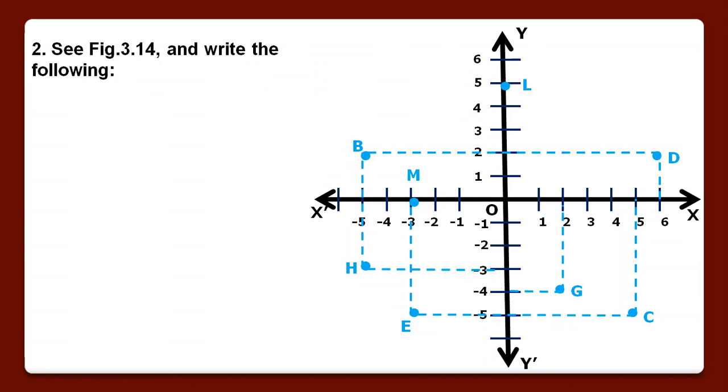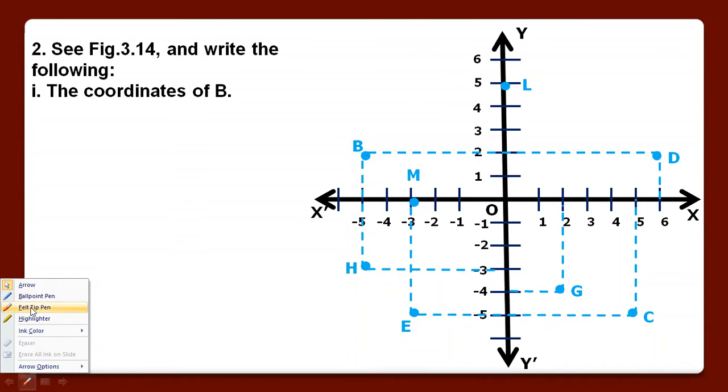See figure 3.14 and write the following. This is figure 3.14 and we have to answer some questions. The coordinates of B: so the point B is marked in the figure like this. For coordinates, first of all we will write x-coordinate, this is minus 5, and the y-coordinate is 2, so we can answer this.